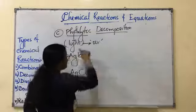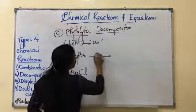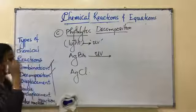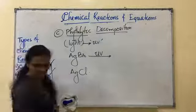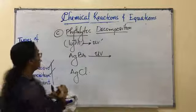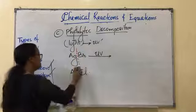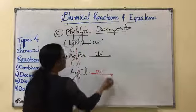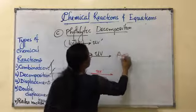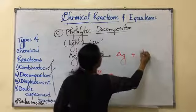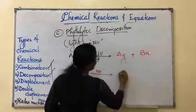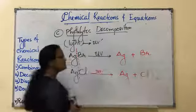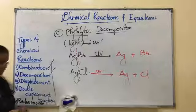So when sunlight is passed through it, so you can represent UV above the arrow, it will break down. And you will get silver and bromide. Here you will be getting silver and chlorine. Is this representation correct? No. Why?